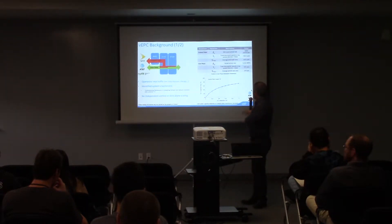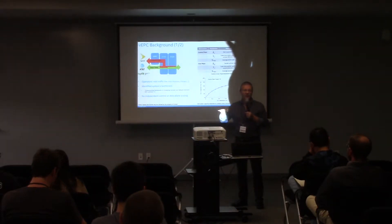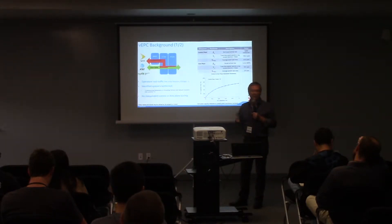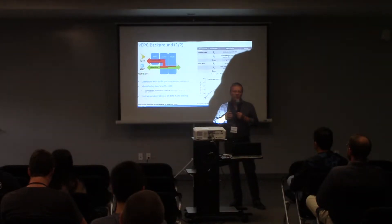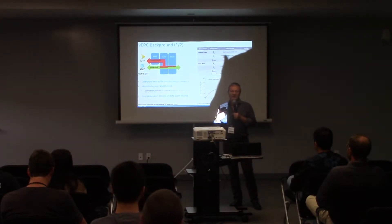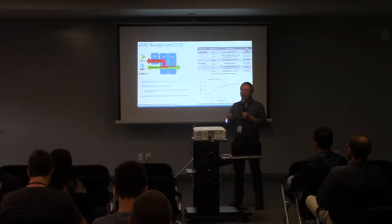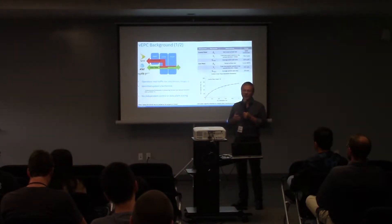We actually had real traffic from these operators from various U.S. regions — San Jose, South Texas, four or five regions — so we were able to play real traffic. What happened: when the system starts to be loaded, you load the system with number of users and traffic, suddenly the impact of the control plane is very significant on your data plane. You lose a lot of throughput.